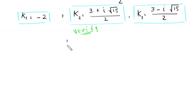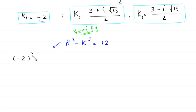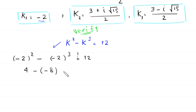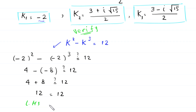To verify, we use the original equation k squared minus k cubed is equal to 12. When k is equal to negative 2, this becomes negative 2 squared minus negative 2 cubed. Negative 2 squared is 4, minus negative 2 cubed which is negative 8, so this becomes 4 plus 8, which is 12, equal to 12. You can see that the left hand side equals the right hand side, so this is a valid solution.